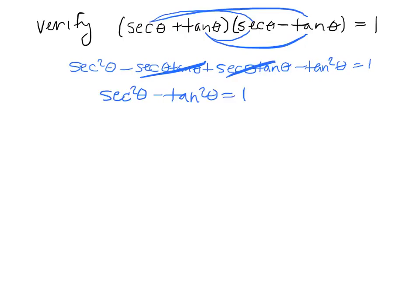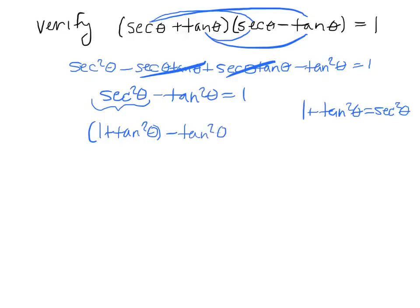Now I have secant squared minus tangent squared equals 1. We're going to use the Pythagorean identity that 1 plus tangent squared equals secant squared. One way is to replace secant squared with 1 plus tangent squared — the parentheses aren't needed, and the two tangents cancel out, giving you 1 equals 1. Alternatively, rearrange the identity to secant squared minus tangent squared equals 1 directly.